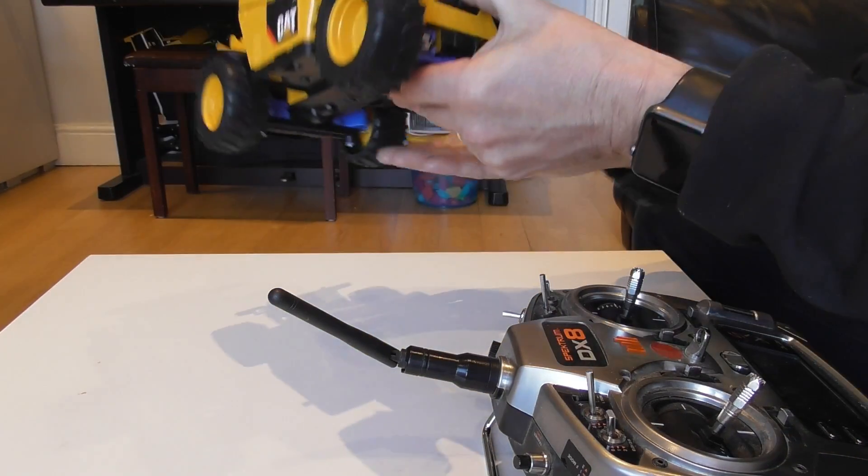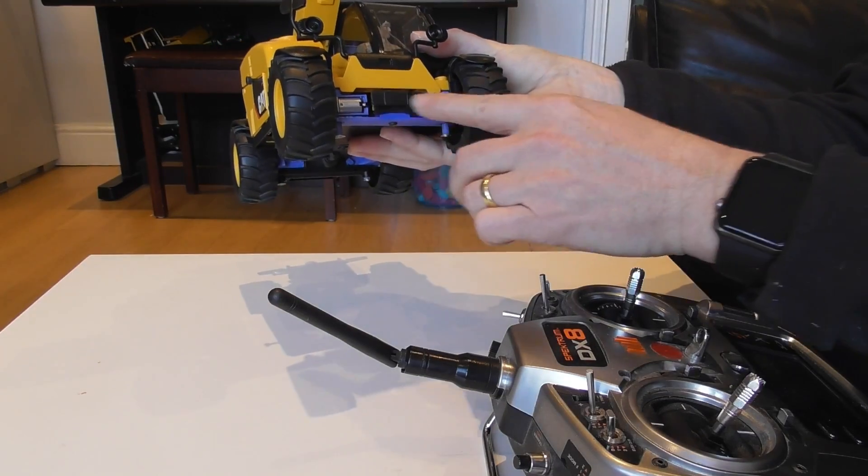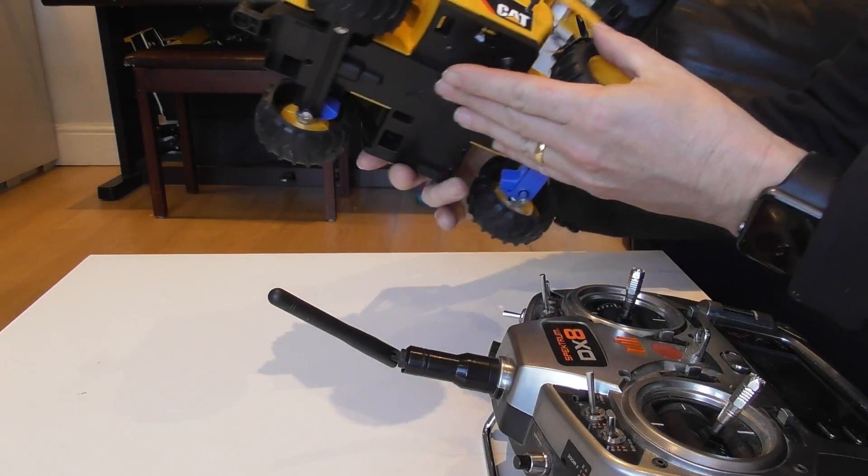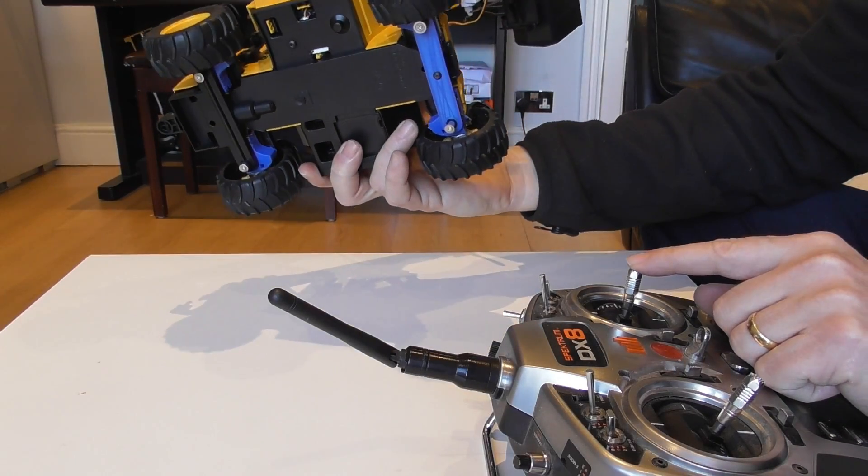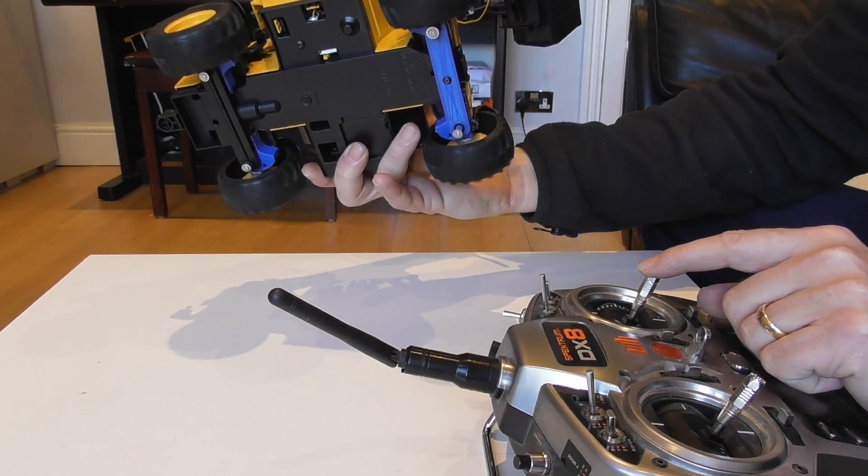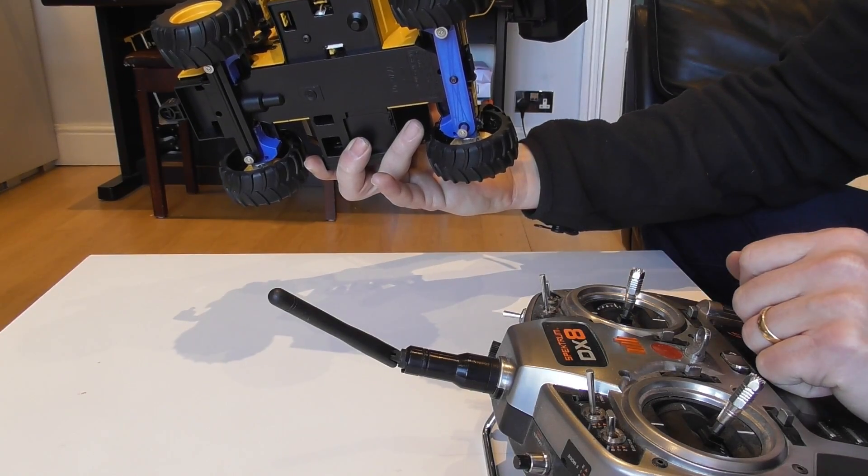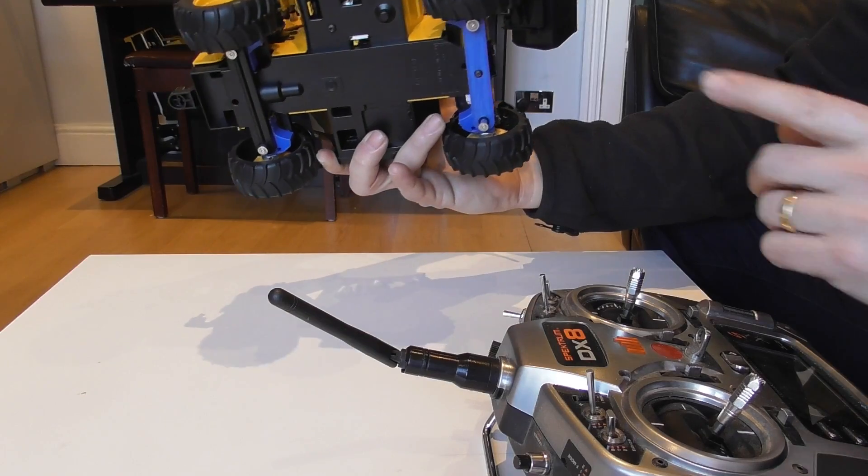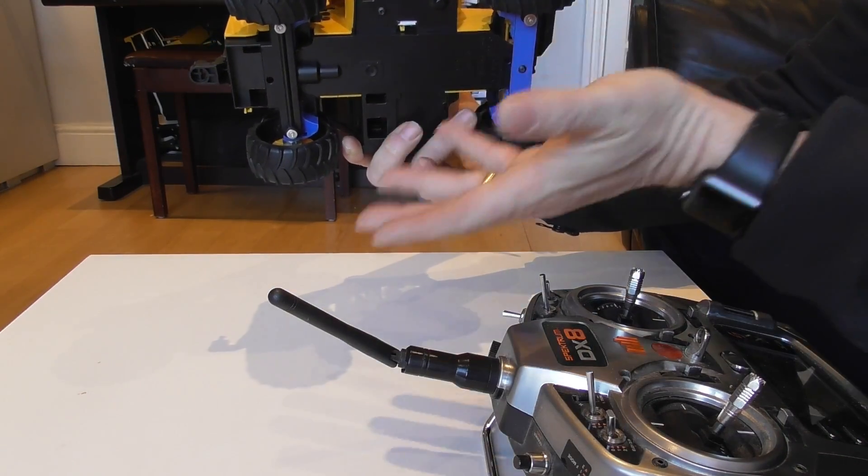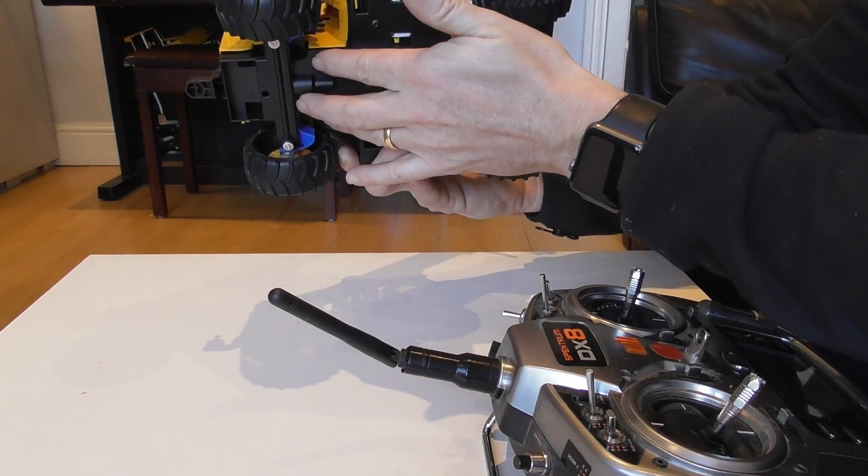So I've got four motors, one in each corner, and they are permanently linked up to the throttle. So if I just do that you can see that we've got four wheel drive and it's all coming off one speed controller.